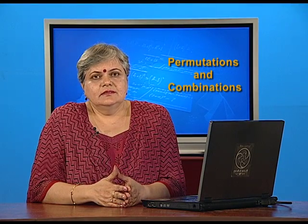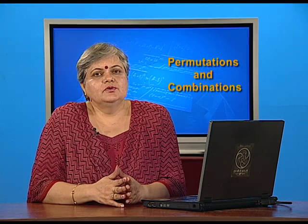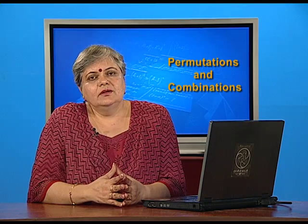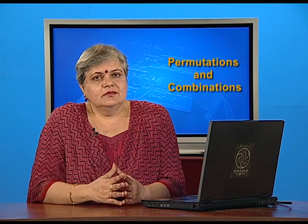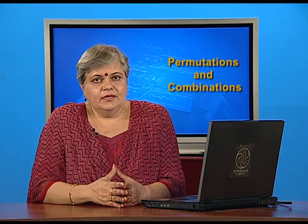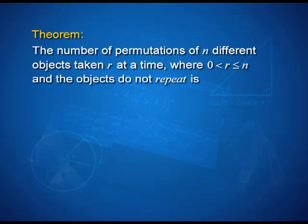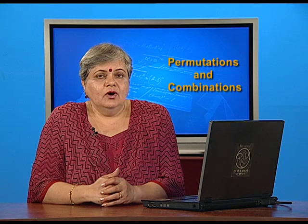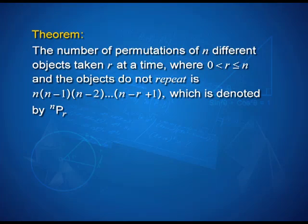Hello viewers. In our last lesson on permutations and combinations, we introduced you to the concept of permutations — the number of ways in which n objects taken r at a time can be arranged when the objects are not repeated. The result said that the number of permutations of n different objects taken r at a time, where 0 < r ≤ n, is n·(n−1)·(n−2)···(n−r+1), denoted nPr, which can also be written as n! divided by (n−r)!.